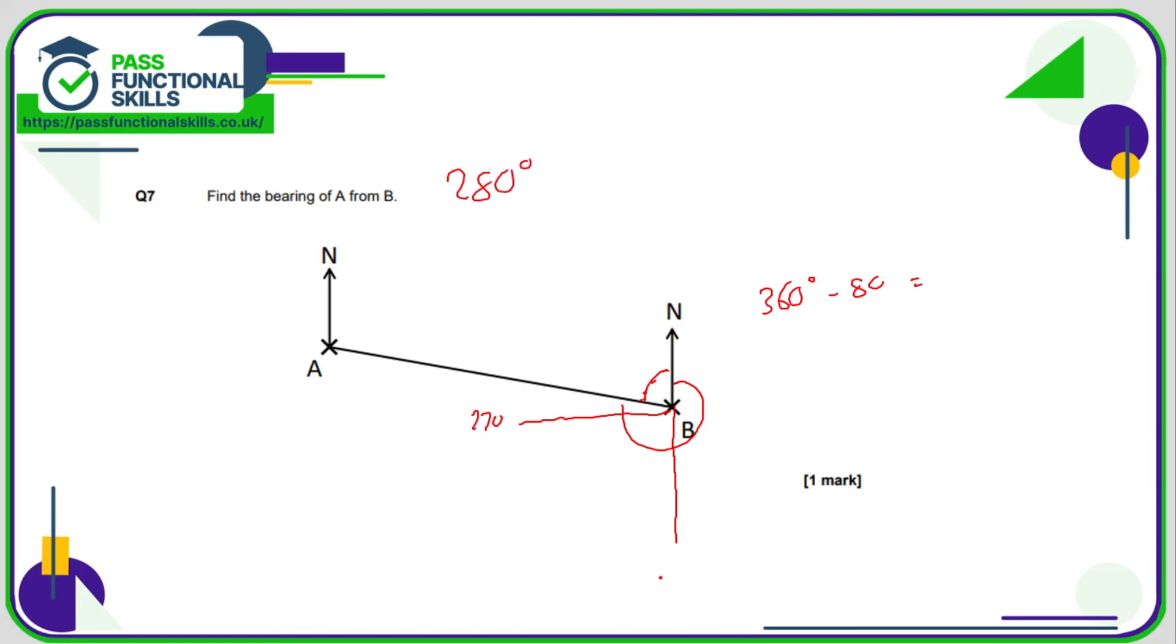Alternatively, this is 180. And then just measure this angle here. If this is 180, then this would be an angle of 100 degrees.